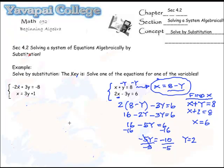So we wind up with the solution is, ordered pair, x is 6, y is 2.